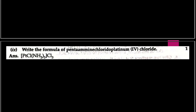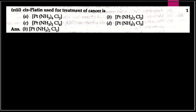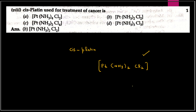Question number eight: cisplatin used for treatment of cancer. Yeh bahut important question hai from application of coordination compounds. Cisplatin jo cancer ke treatment ke liye use kiya jaata hai, that is Pt(NH3)2Cl2 — platinum with two ammonia and two chloride ligands. Yeh aapko hamesha yaad rakhna hai.